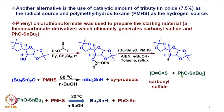The side product from the tin-based reagent — the phenoxytributyltin derivative — then reacts with PMHS to regenerate tributyltin hydride. There will also be some silane derivative formed. This is how a catalytic amount of tributyltin oxide is utilized to carry out deoxygenation of alcohols to the corresponding hydrocarbons.